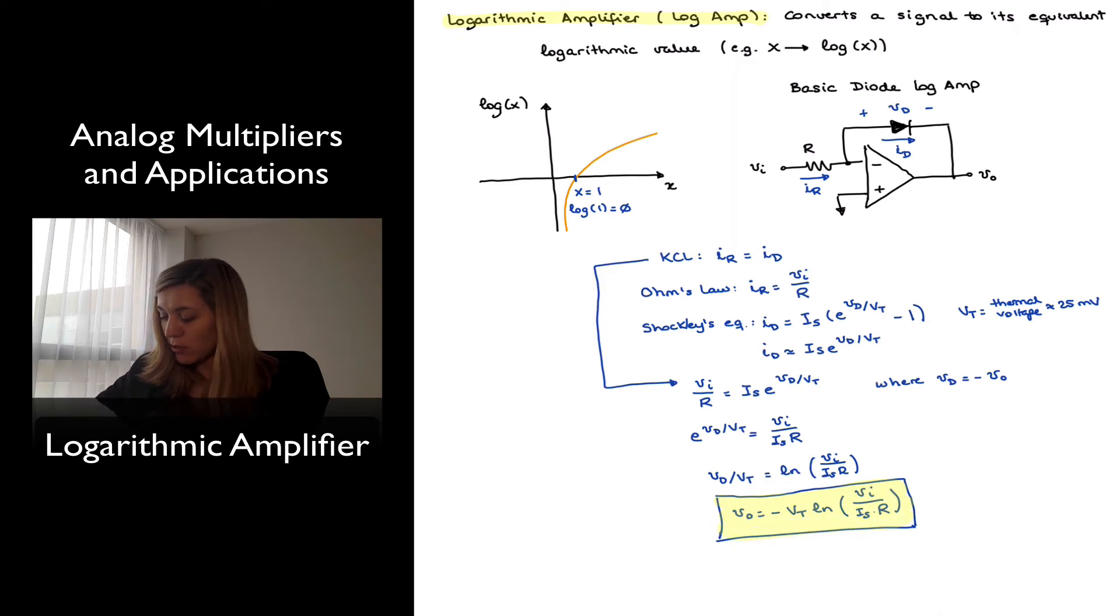So notice from this expression that Vout is proportional to the natural log of VIN. And again, there are two proportionality constants there. So what we have gotten in reality is Vout is equal to K1, first proportionality constant, times the natural log of VIN divided by K2, or K2 times VIN, however you want to write it. But the important point being that the output voltage is proportional to the natural log of the input voltage.